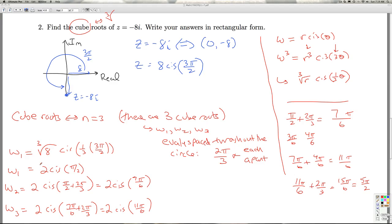So these are the 3 cube roots of negative 8i, but that's the polar form. They want the final answer in rectangular form. And so to get back to rectangular form, we've got to remember what the cis stands for. That's cosine theta plus i sine theta. So that's all we have to do now is to convert these back to rectangular.